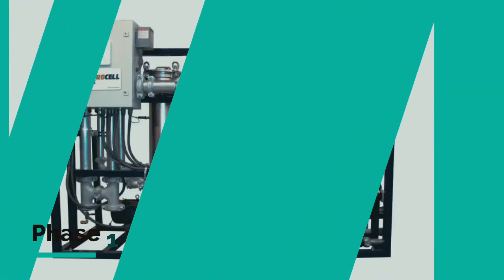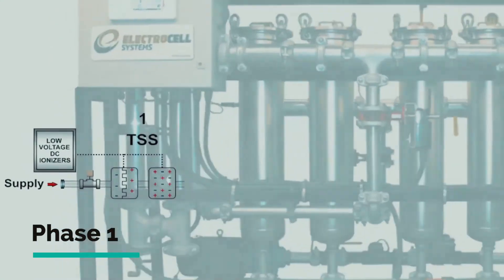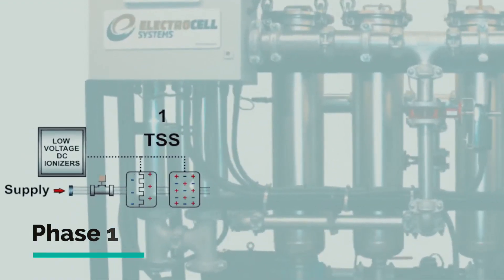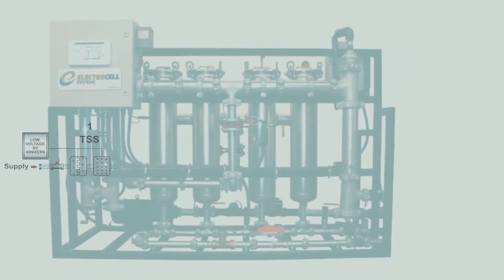Phase 1 of the 3-step treatment process is the application of alternating positive and negative electrical charges to the suspended particles using a low-voltage DC ionizer. This makes the oppositely charged suspended particles attract to each other and, as a result, grow in size and weight.